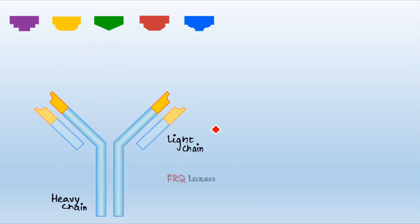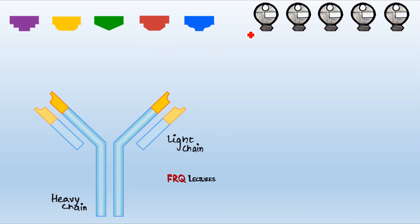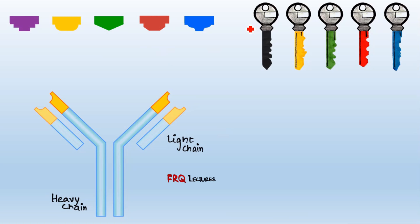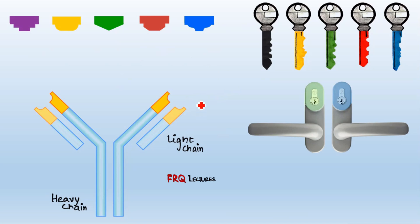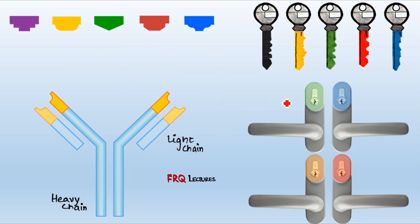We can compare these antigens with keys. The top portions of different keys look similar, but their bottom portions are unique because each key opens a different lock or door. Quite similarly, these antigens have their own unique patterns, and for each antigen there is a unique antibody that will bind it — similar to the lock-and-key model of enzymes.